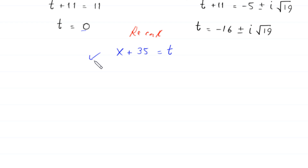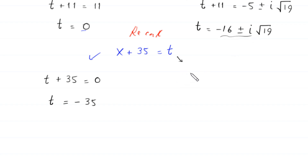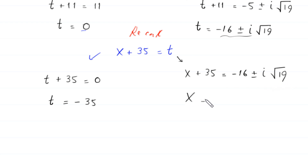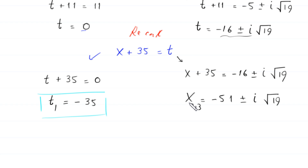We recall that x plus 35 equals t. When t equals 0, x plus 35 equals 0, so x equals negative 35. When t equals negative 16 plus or minus i root 19, x plus 35 equals negative 16 plus or minus i root 19, so x equals negative 51 plus or minus i times root 19. So we have three solutions: x equals negative 35, and x equals negative 51 plus or minus i times root 19. See you.